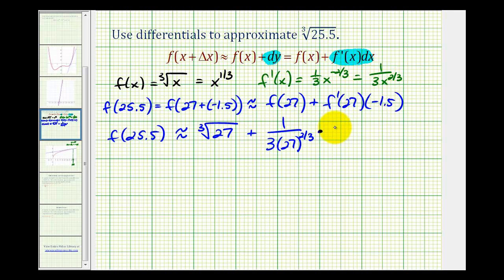...plus the derivative evaluated at 27. That'll be 1 over 3 times 27 to the 2/3 power times differential dx, which is negative 1.5, which I'll write as negative 3/2 since this is in fraction form.